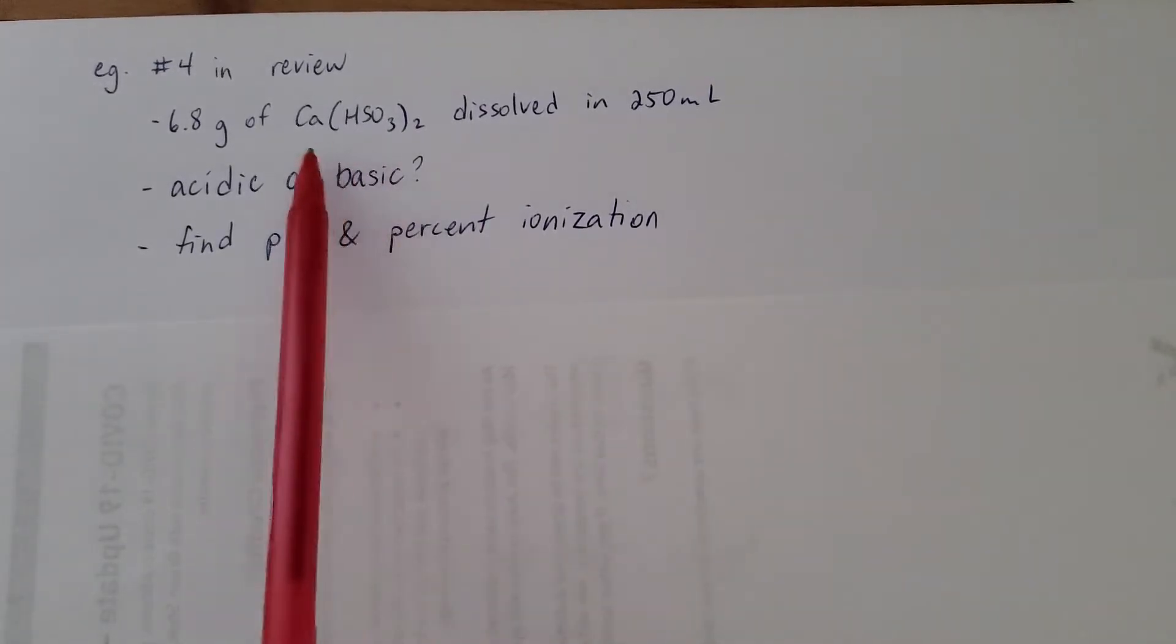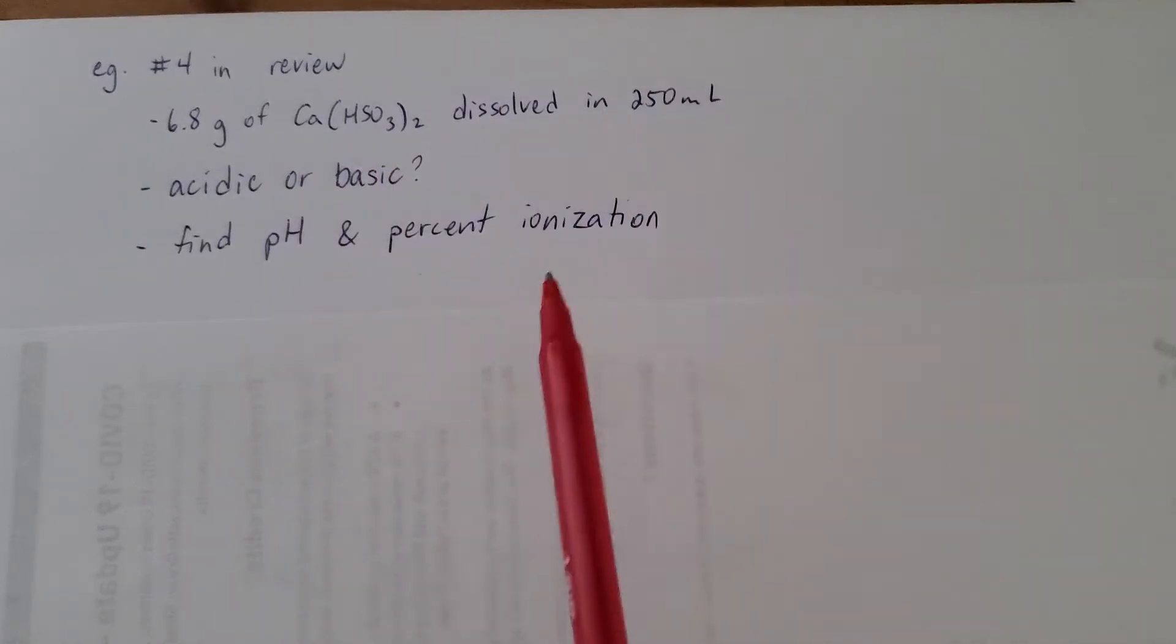So these are the highlights from the last question on the review. 6.8 grams of this calcium hydrogen sulfite, 250 mils of water. I'm asking you, is it acidic or basic? Then we'll find the pH and percent ionization.